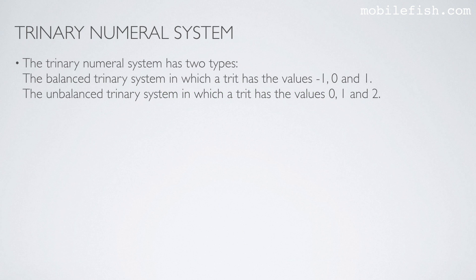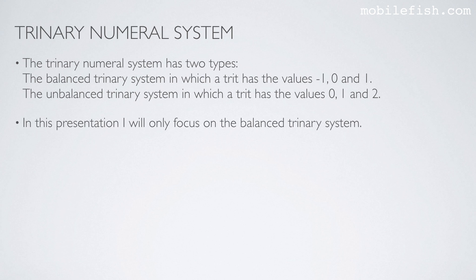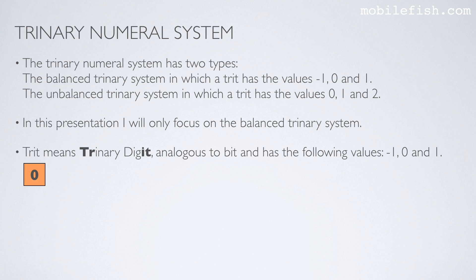The trinary numeral system has two types. The balanced trinary system, in which a trit has the values minus 1, 0, and 1, and the unbalanced trinary system, in which a trit has the values 0, 1, and 2. In this presentation I will only focus on the balanced trinary system. Trit means trinary digit, analogous to bit, and has the following values: minus 1, 0, and 1.